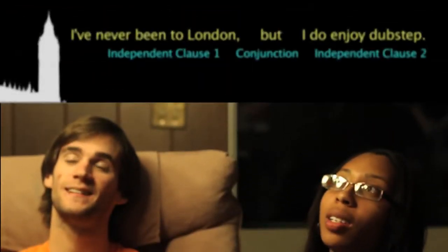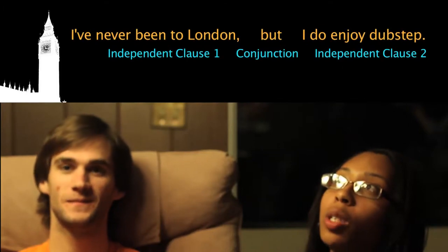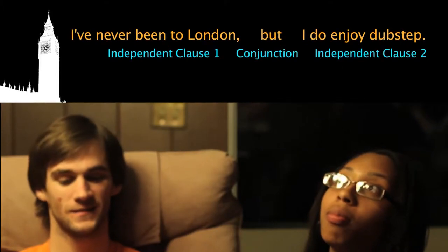A compound sentence is made up of two independent clauses. Each of them contains its own subject and verb, both standing on their own without any other context. An example of a compound sentence is: 'I've never been to London, but I do enjoy dubstep.'